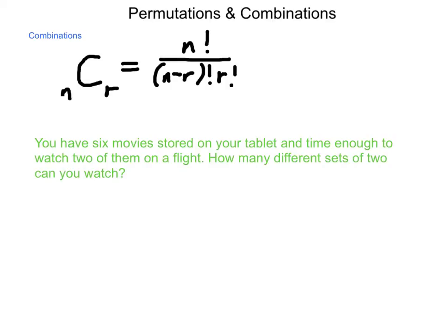So, situation. You have six movies stored on a tablet, and time enough to watch two of them during a flight. You're going on a family trip. How many different sets of two movies can you watch? So, what we have here is a situation of six choose two, or a combination of six items taken two at a time, and that is computed as six factorial divided by six minus two factorial times two factorial. Now, six factorial, a lot easier than our twelve factorial we had, but it is six, five, four, three, two, and one all being multiplied. And that is divided by six minus two is four, so we have four factorial, four, three, two, and one times two factorial, so we get another two times one.